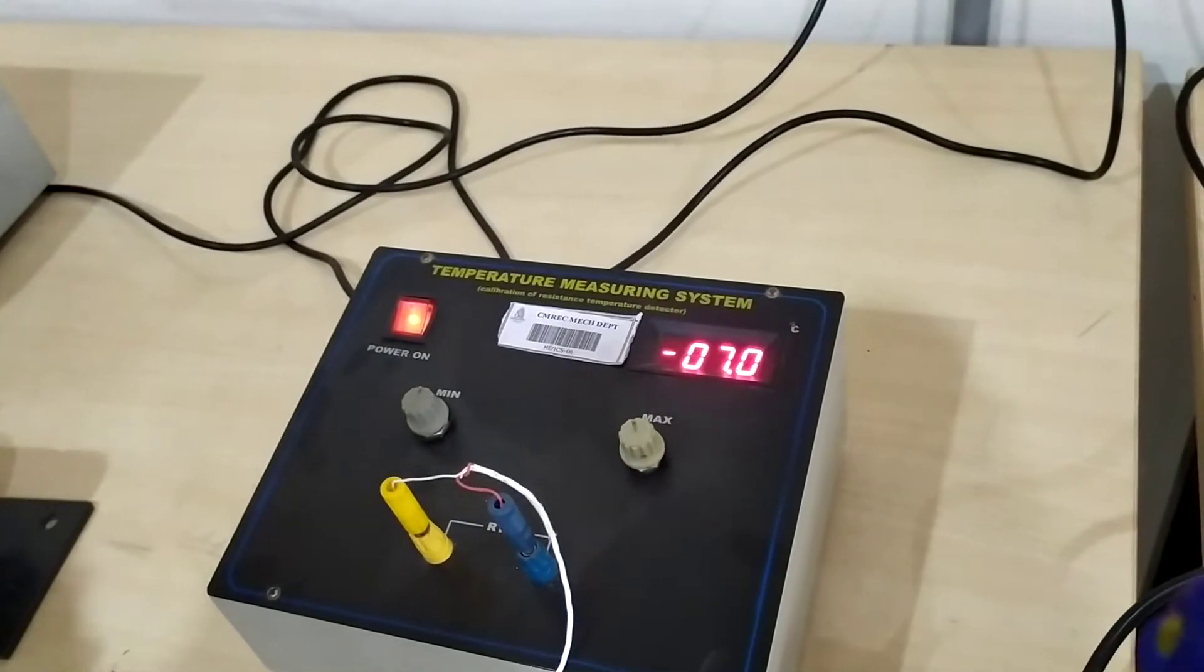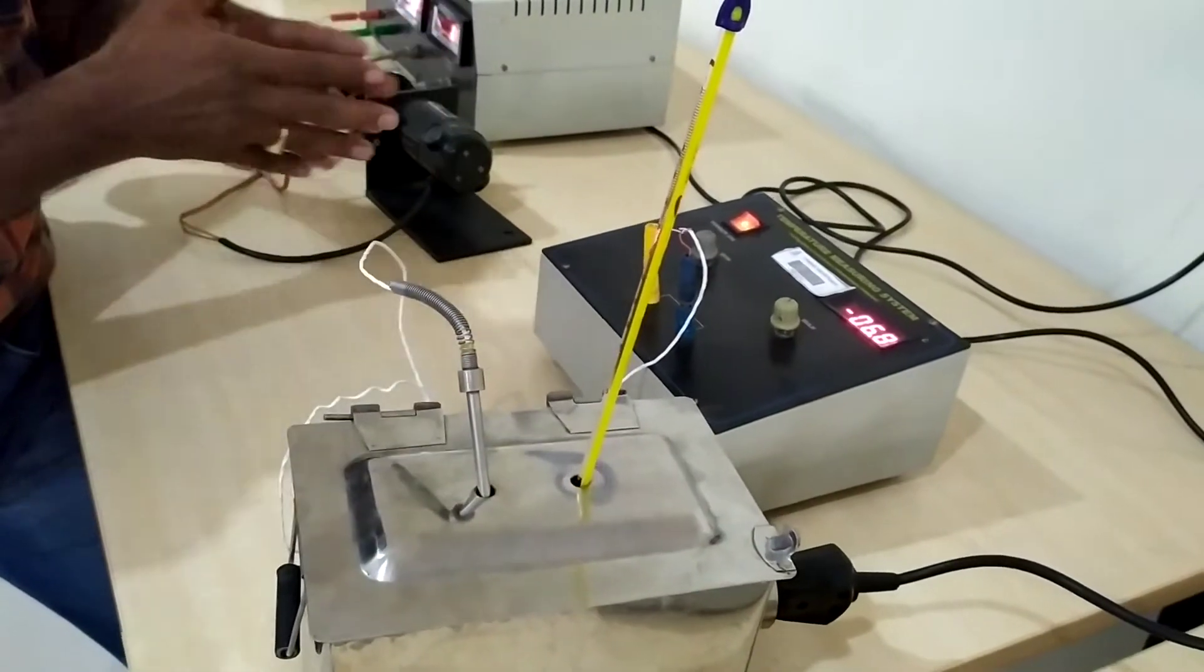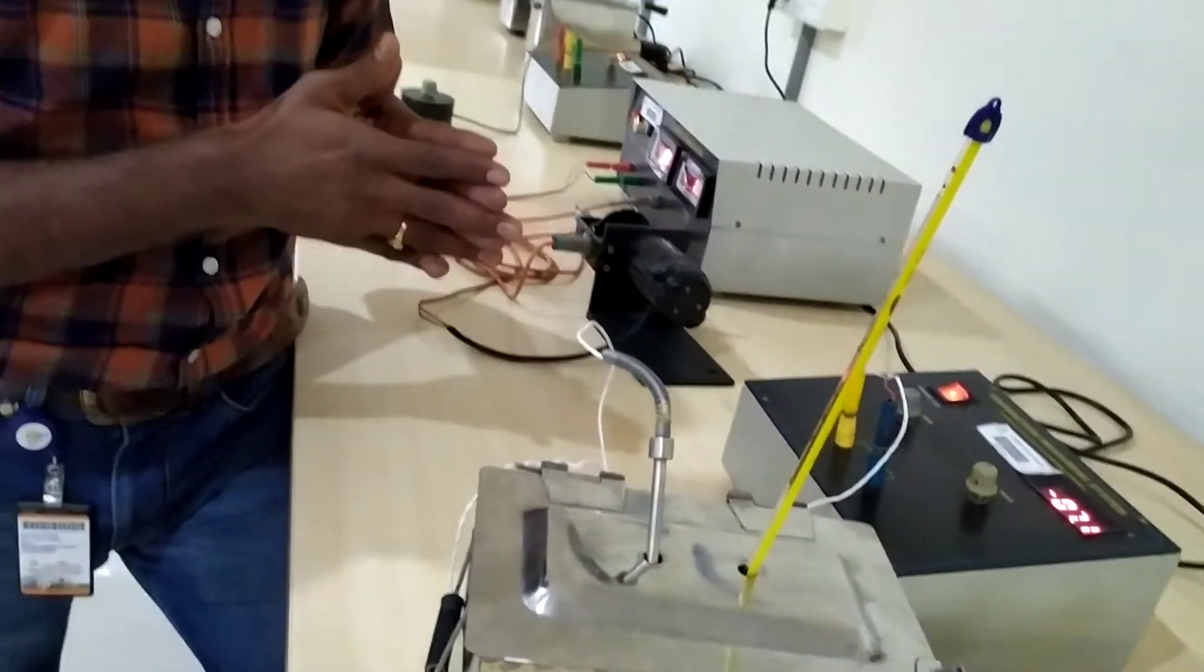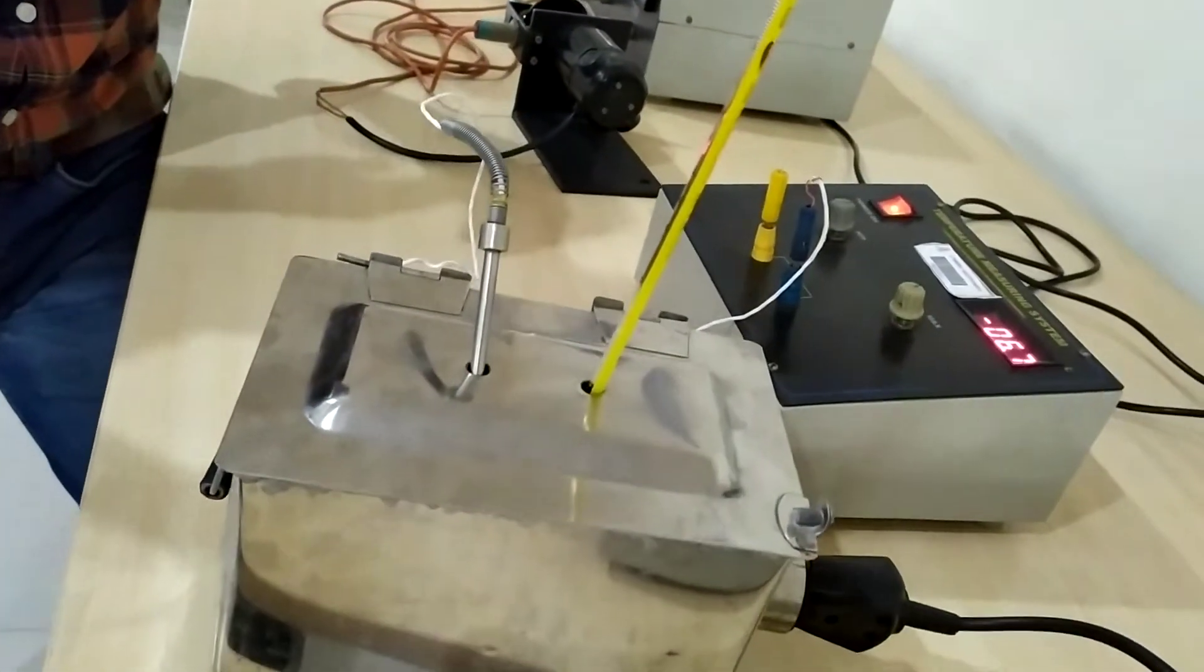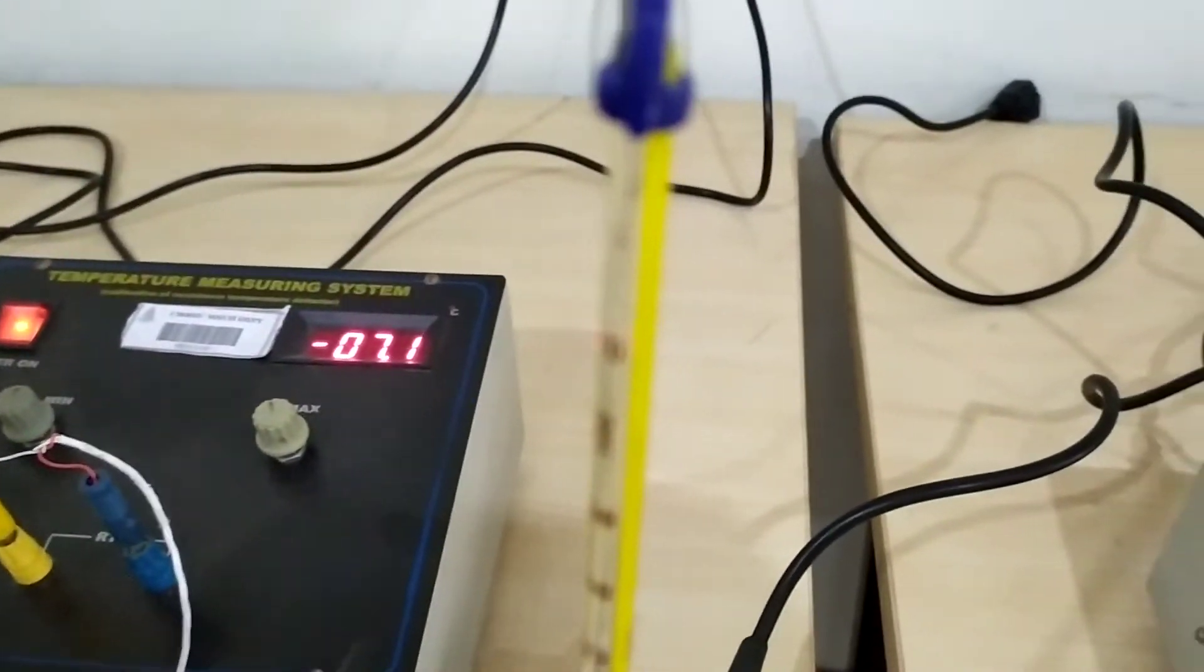Thermocouples are not preferred below 600 degrees centigrade. But we prefer RTDs to measure the temperature. Whatever procedure we followed to calibrate the thermistor, the same procedure we can follow again.